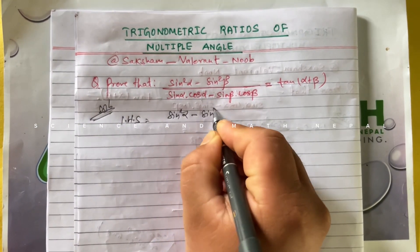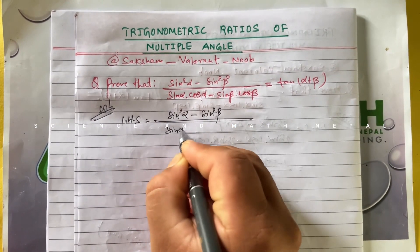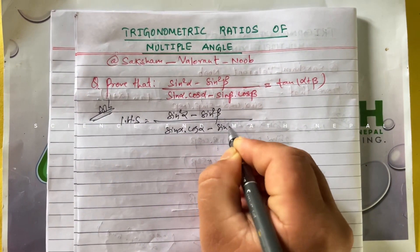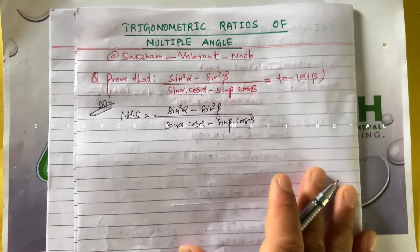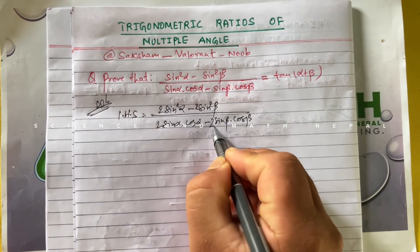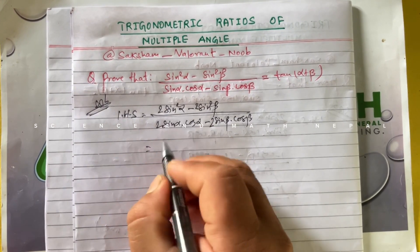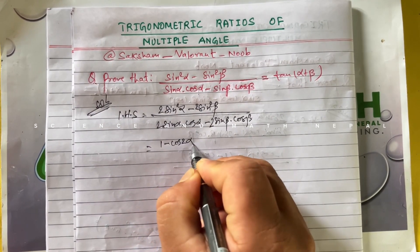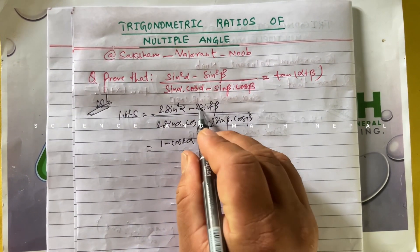Let's multiply the numerator and denominator by 2. Then 2sin²α can be written as (1 - cos2α) using the multiple angle formula, and 2sin²β can be written as (1 - cos2β).